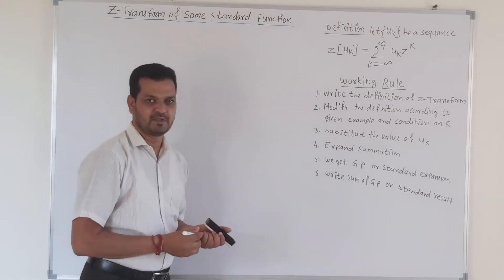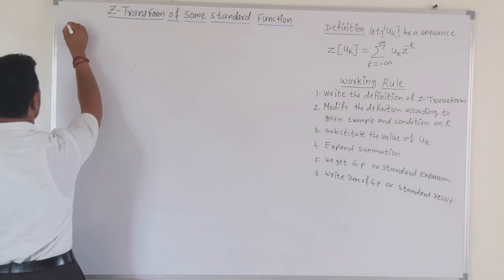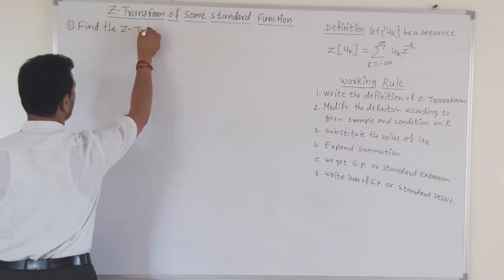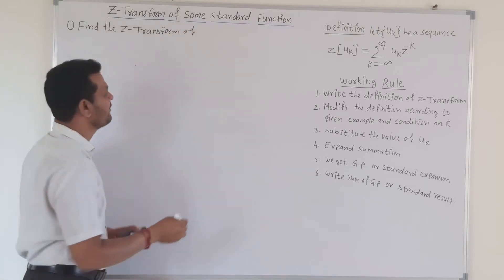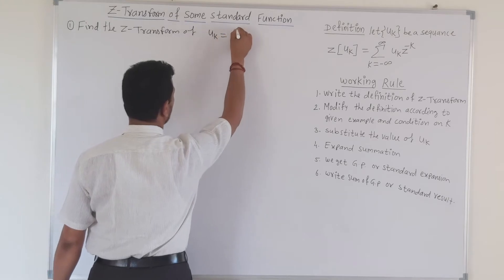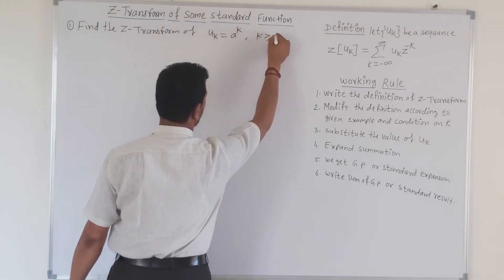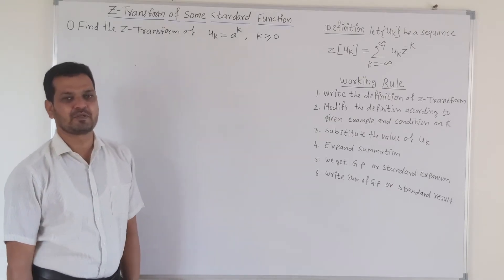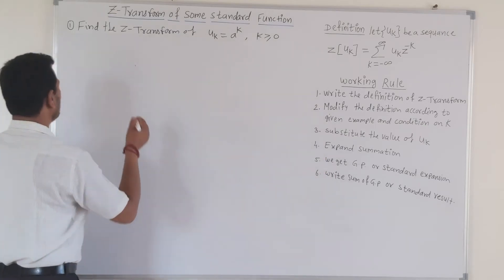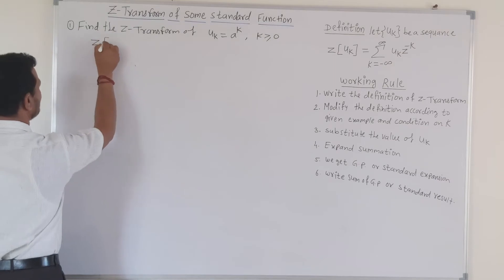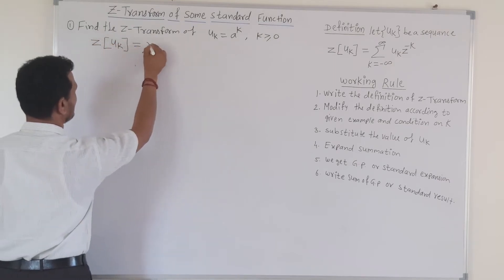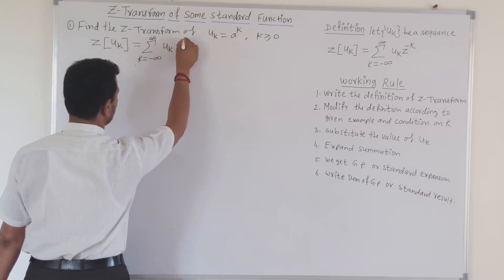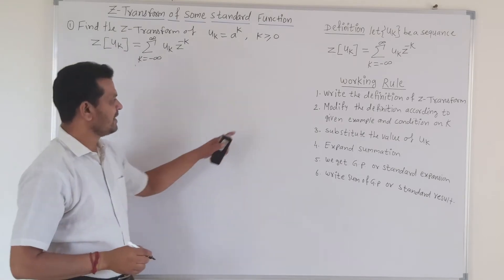Now to understand this concept, let's take the first question: find the Z-transform of sequence u_k equal to a raised to k for k greater than or equal to 0. This is one of the standard functions. According to our working rule, first we write down the definition: Z-transform of u_k equals summation from k equals minus infinity to plus infinity of u_k times z raised to minus k.